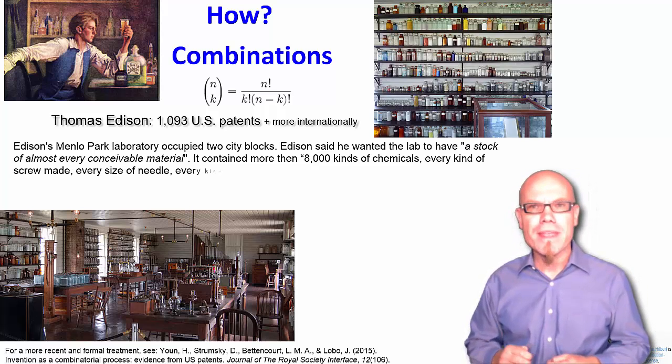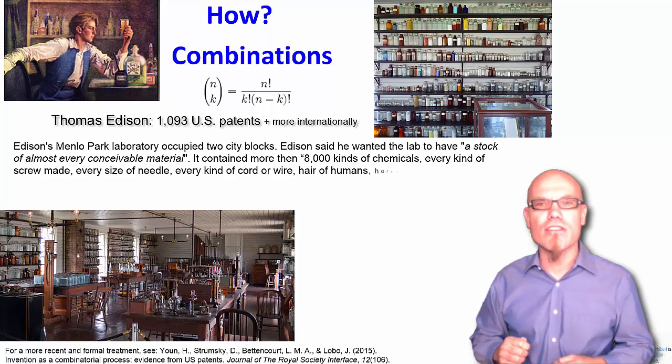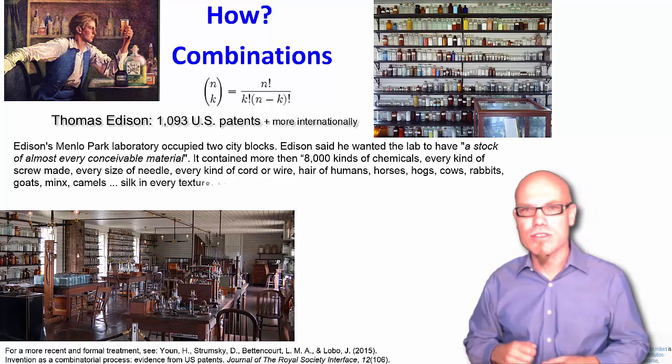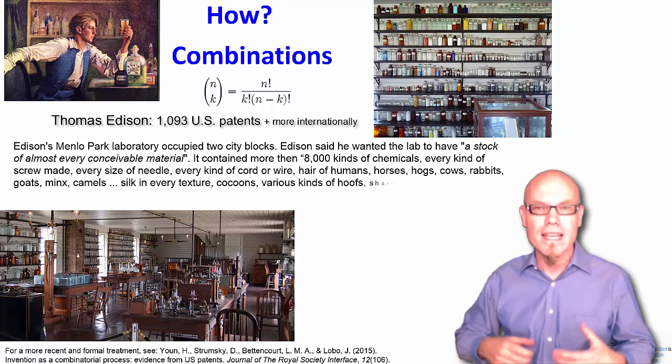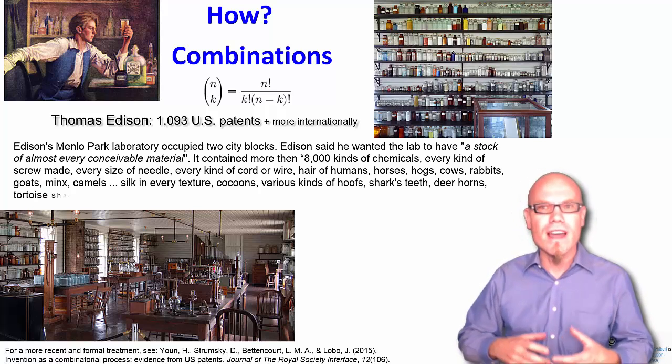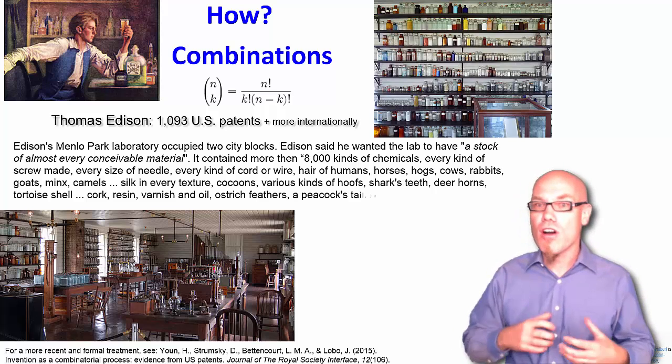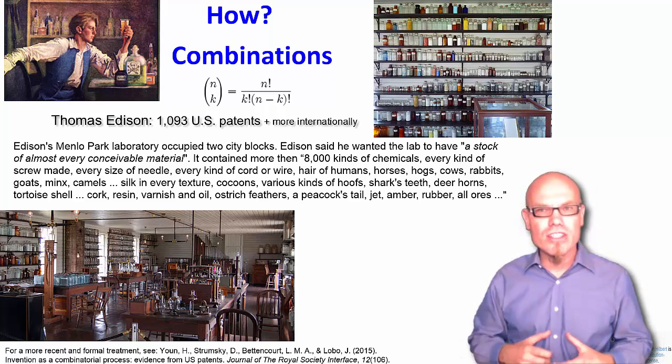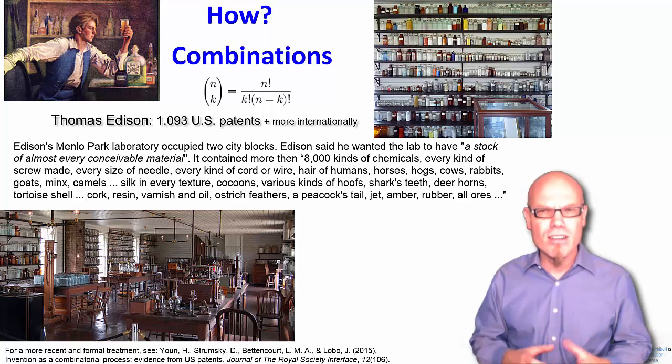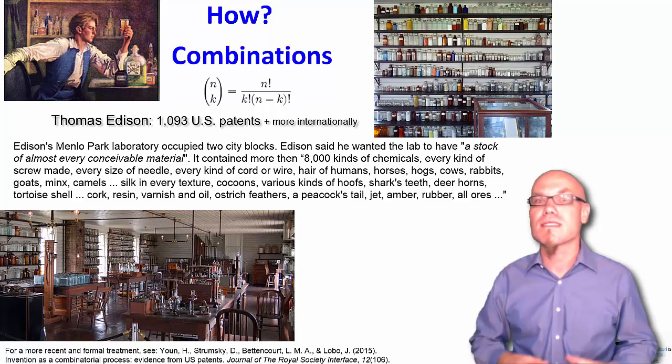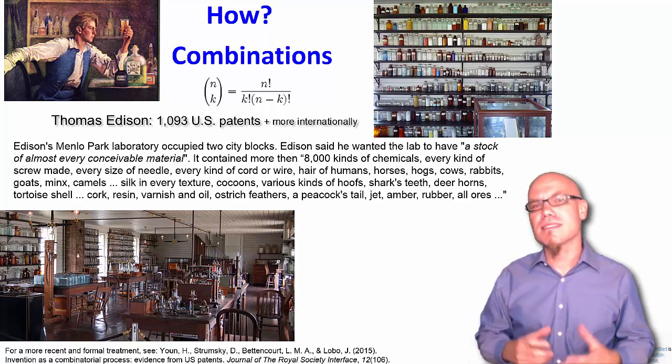Edison's Menlo Park Laboratory occupied two city blocks. Edison said he wanted the lab to have a stock of almost every conceivable material. It contained more than eight thousand kinds of chemicals, every kind of screw made, every size of needle, every kind of cord or wire, hair of humans, horses, hawks, cows, rabbits, goats, minks, camels, silk in every texture, cocoons, various kinds of hoofs, shark tears, deer horns, tortoise shells, cork, resin, varnish and oil, ostrich feathers, peacock tails, jet, amber, rubber, all kinds of ores. Everything in his laboratory.